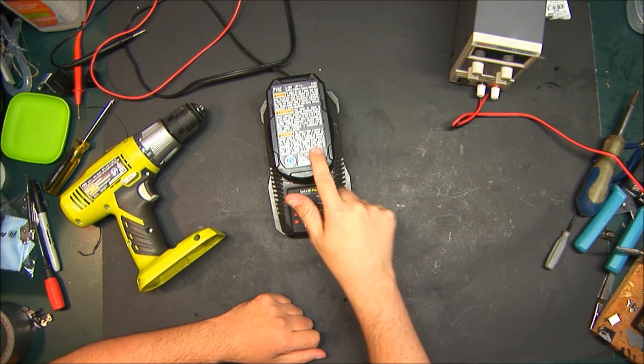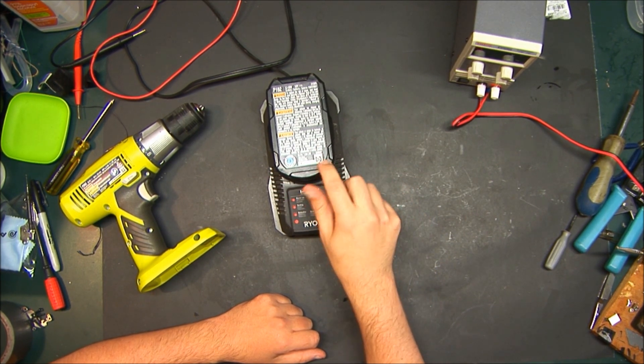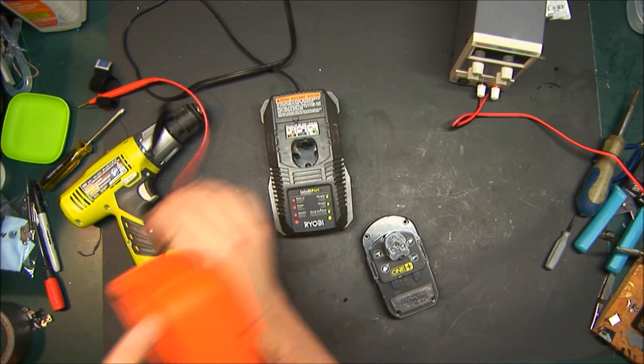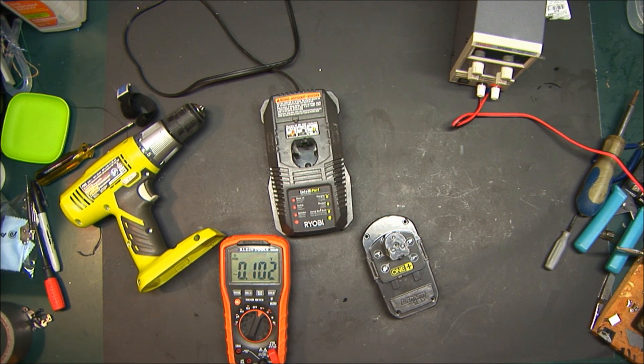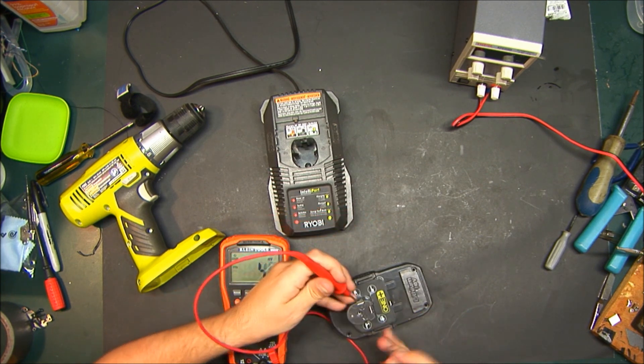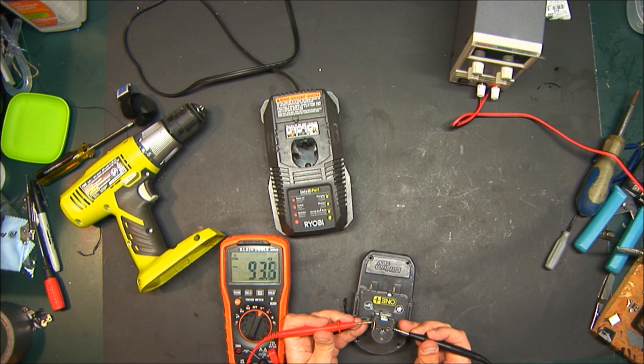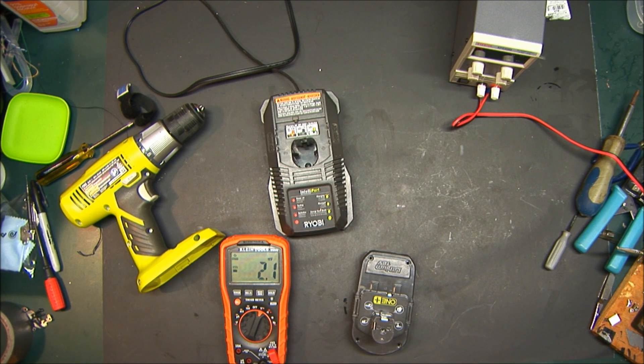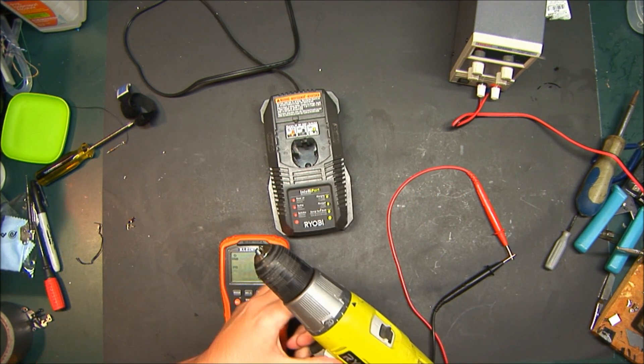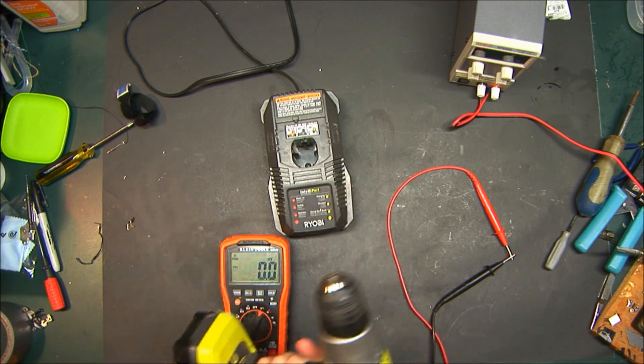I wasn't sure if it was the charger or the battery. However, chances are it's the battery. When we take our meter and check the terminals, we get 92, 93 millivolts. So essentially nothing is coming out of it. You plug it into a drill, nothing happens.